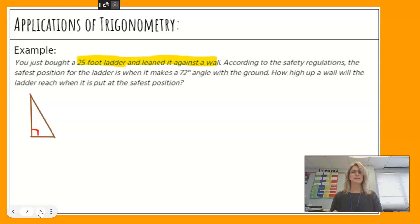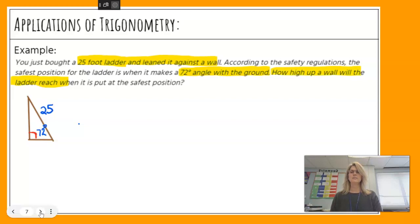25-foot ladder, leaning against the wall. That's going to be my hypotenuse, so let's label my hypotenuse the 25. I'm also seeing an angle of 72 degrees with the ground. That's going to be my angle of elevation, so I'm going to put that in the bottom right corner, because it's the angle going up from the ladder and the ground. How high up on the wall will this reach? So there's my unknown. I want to know the vertical height.